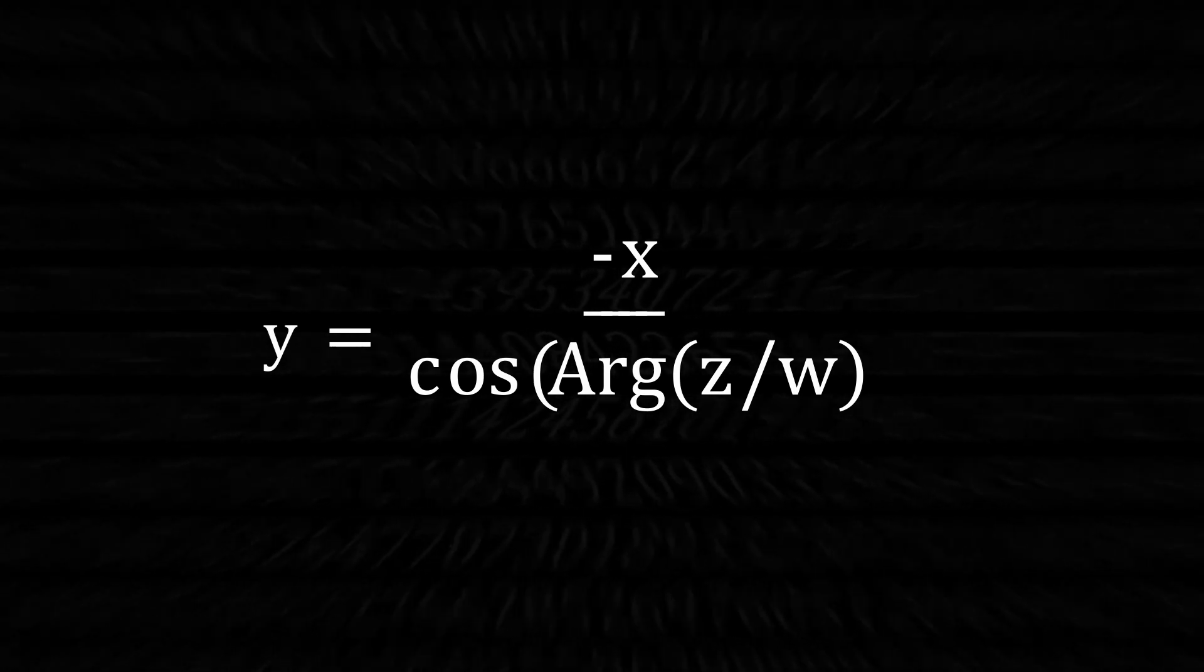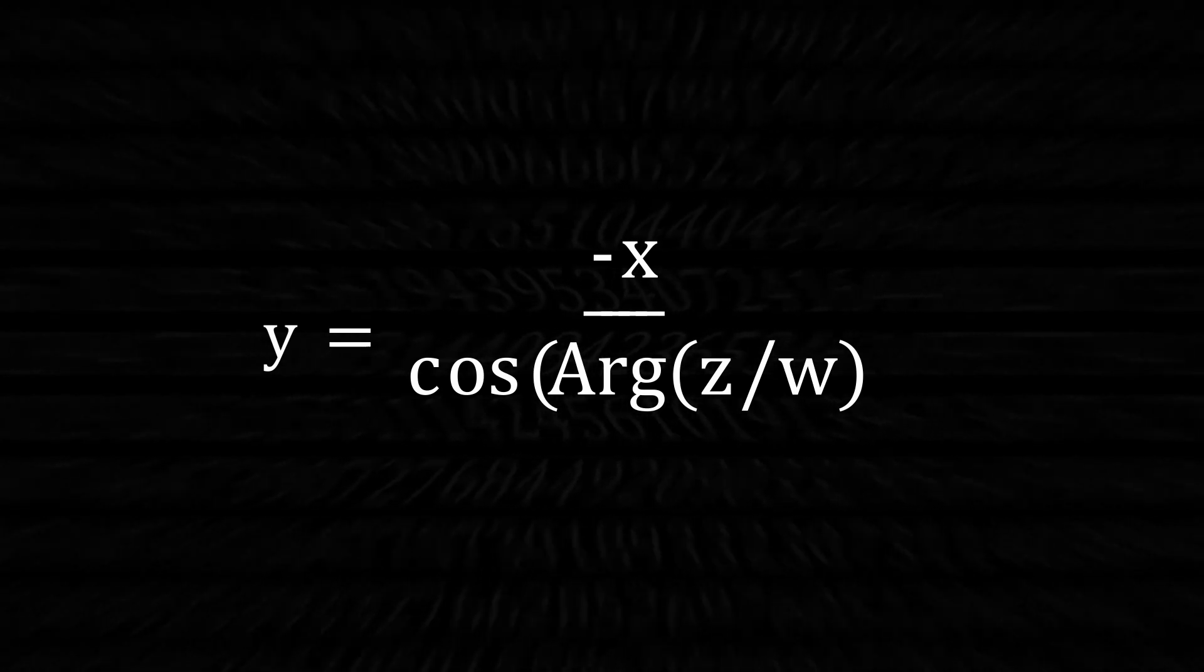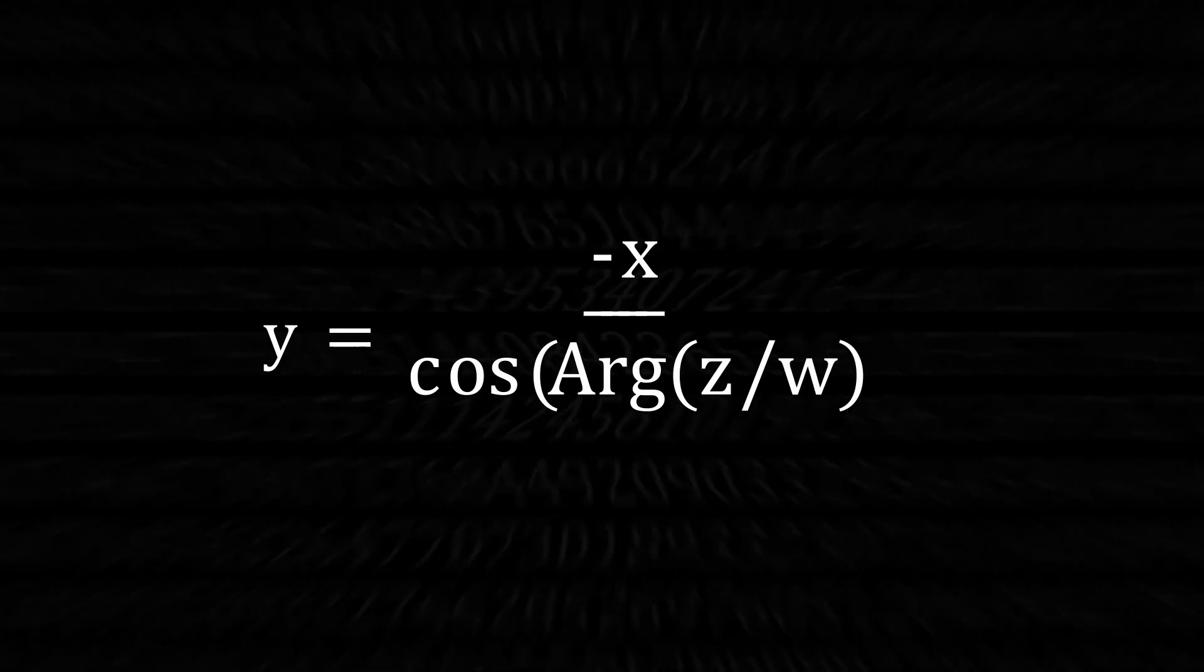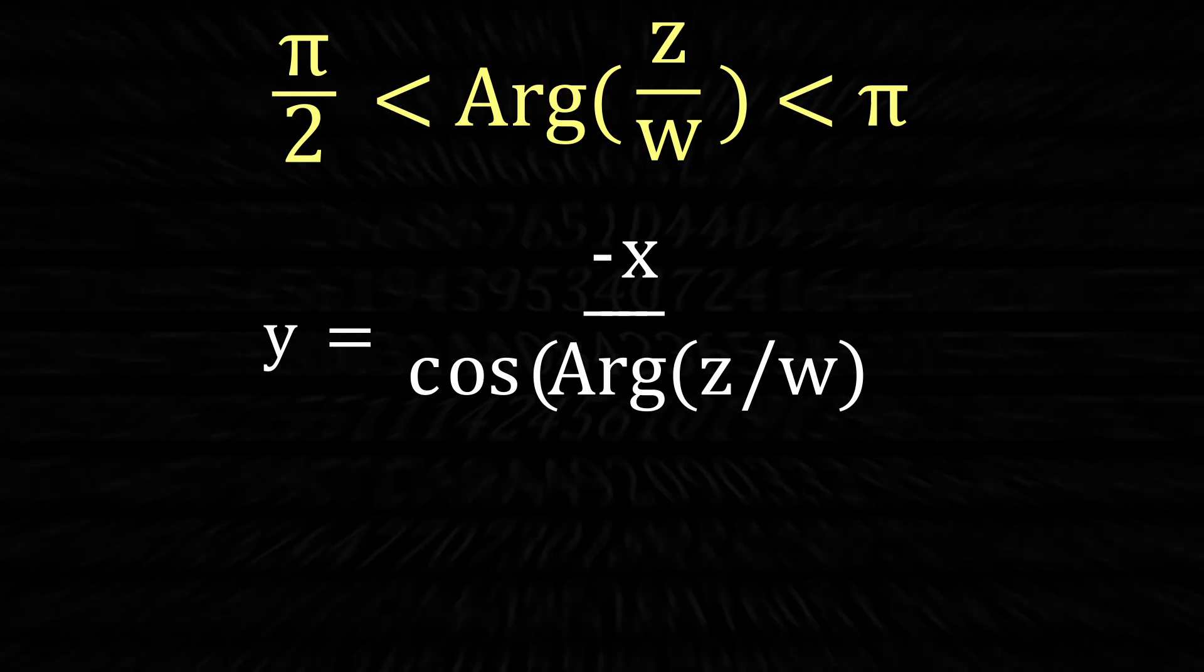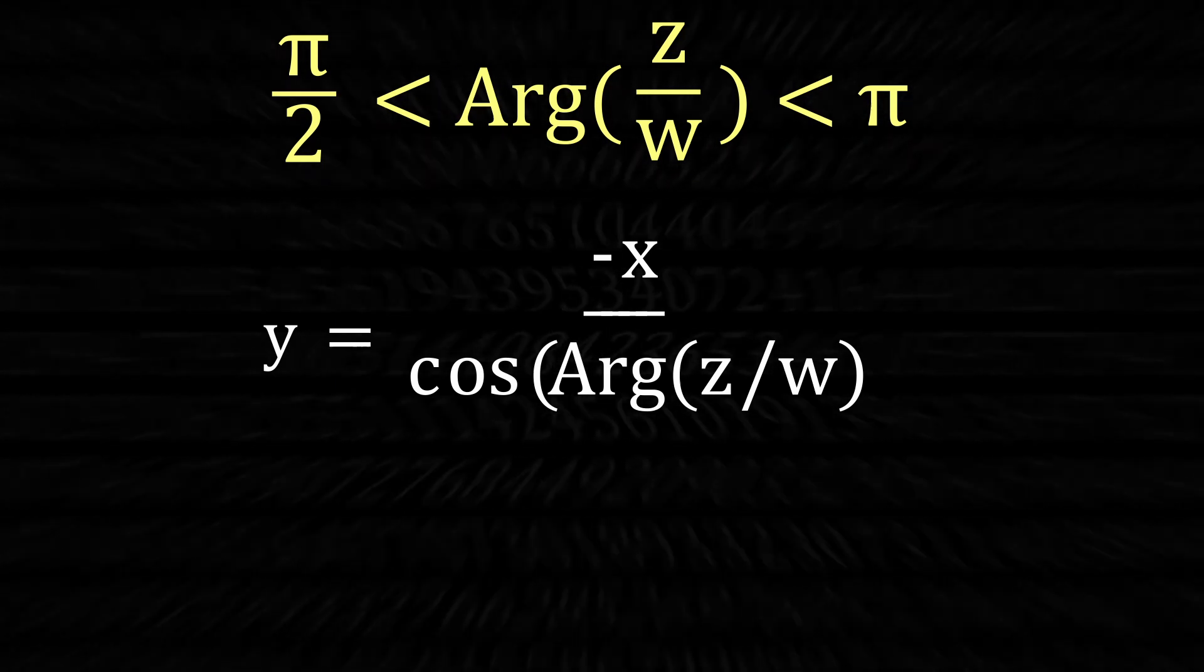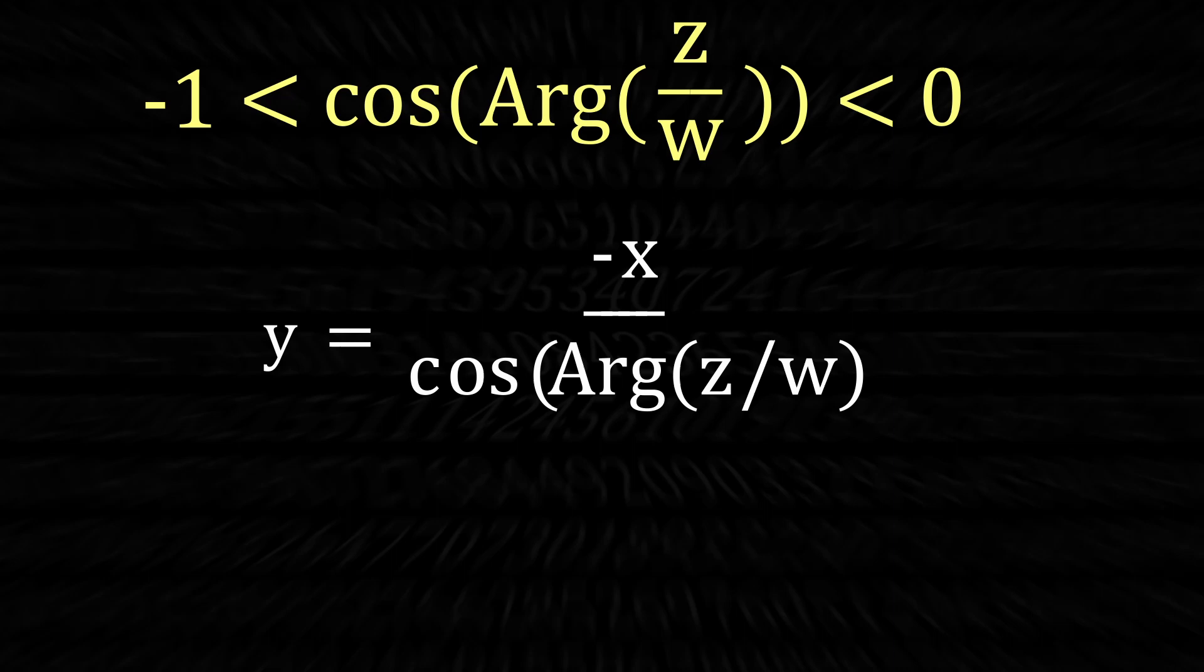We're finally here at the end of the question. All we need is one last observation. It was given that this argument was in between pi divided by 2 and pi, so this means that its cosine is in between 0 and negative 1.